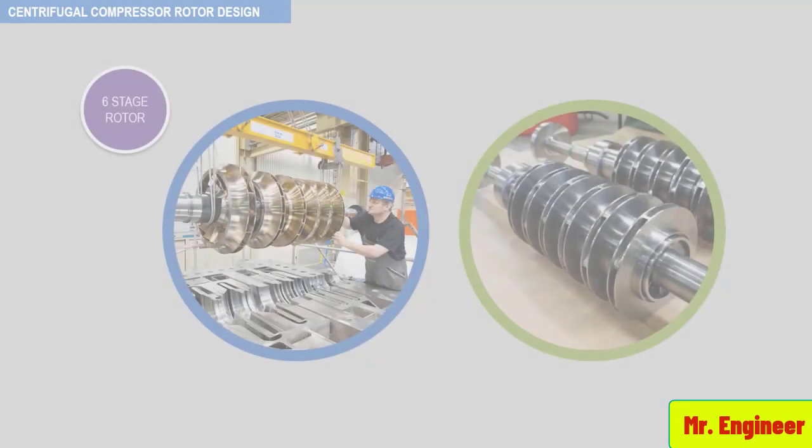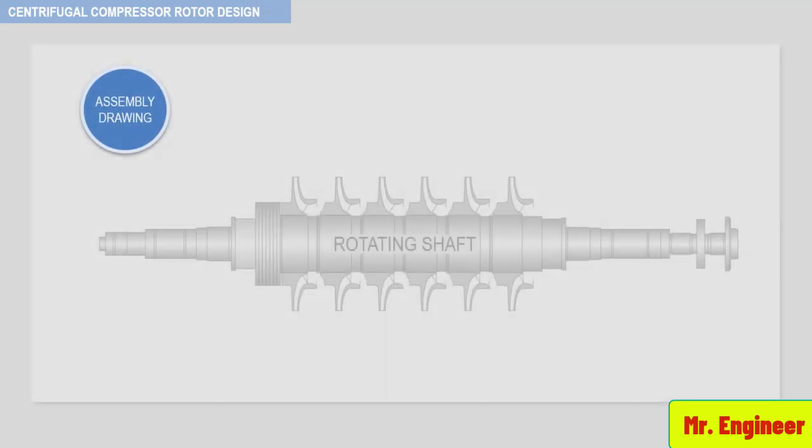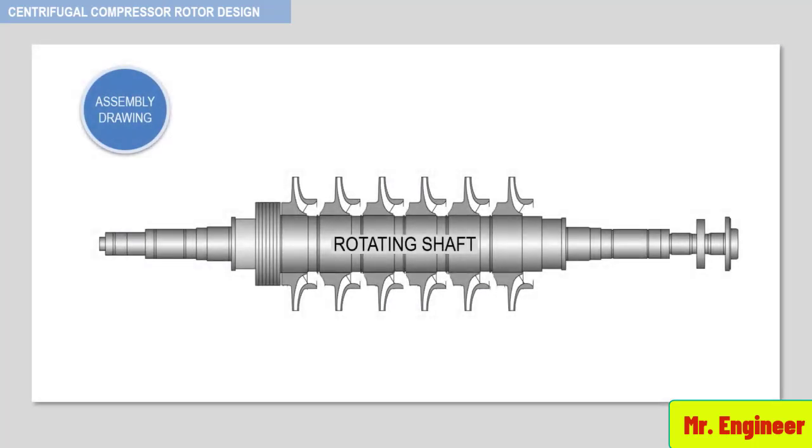You can see here a six-stage centrifugal compressor rotor. The assembly drawing of the same rotor is shown in this figure. Any compressor rotor, regardless of its type, consists of various components mounted on a shaft. For centrifugal compressors, these components are the impellers.